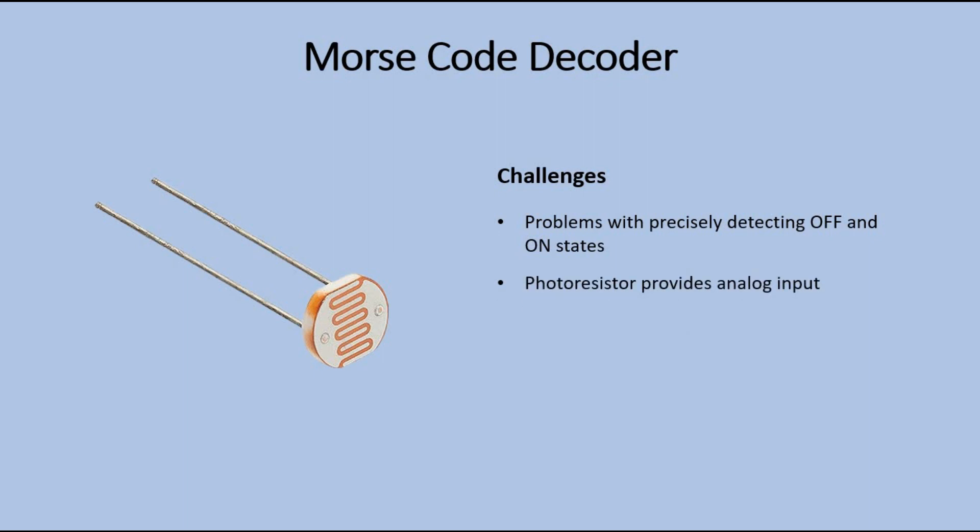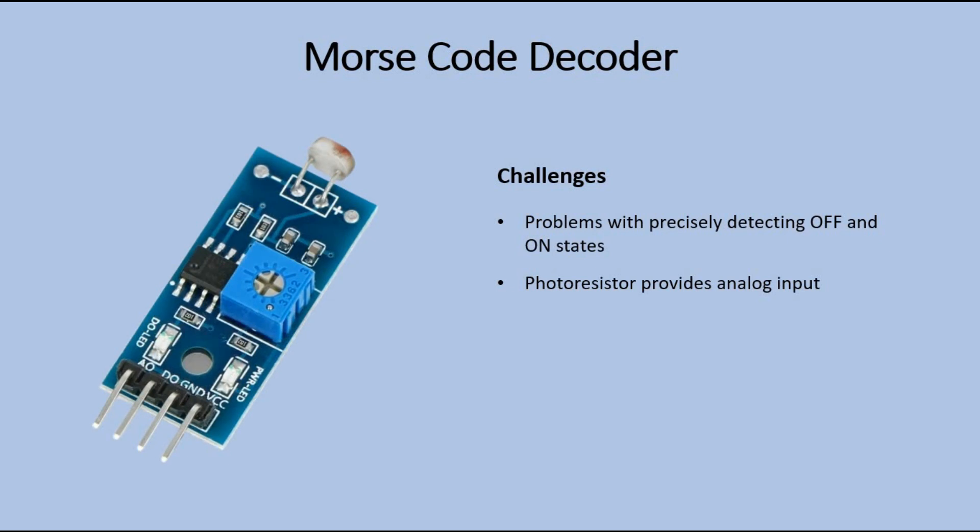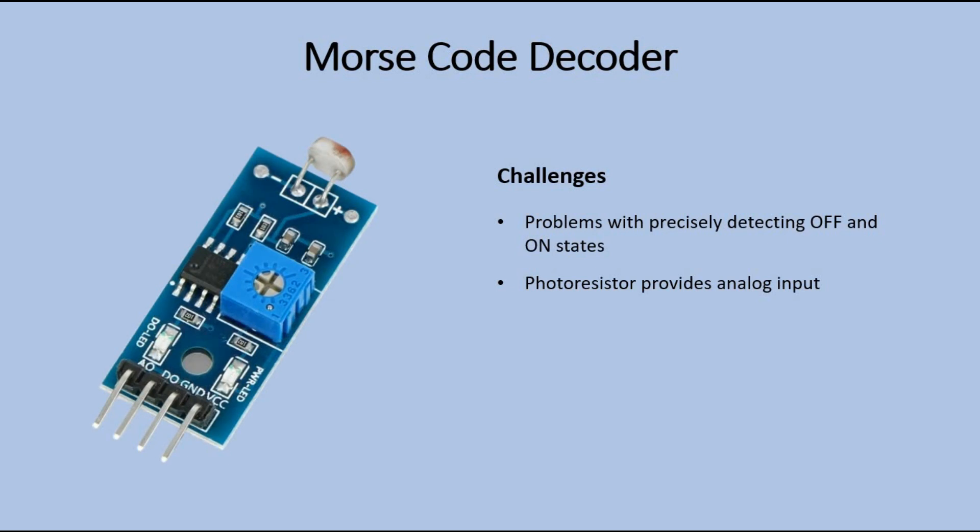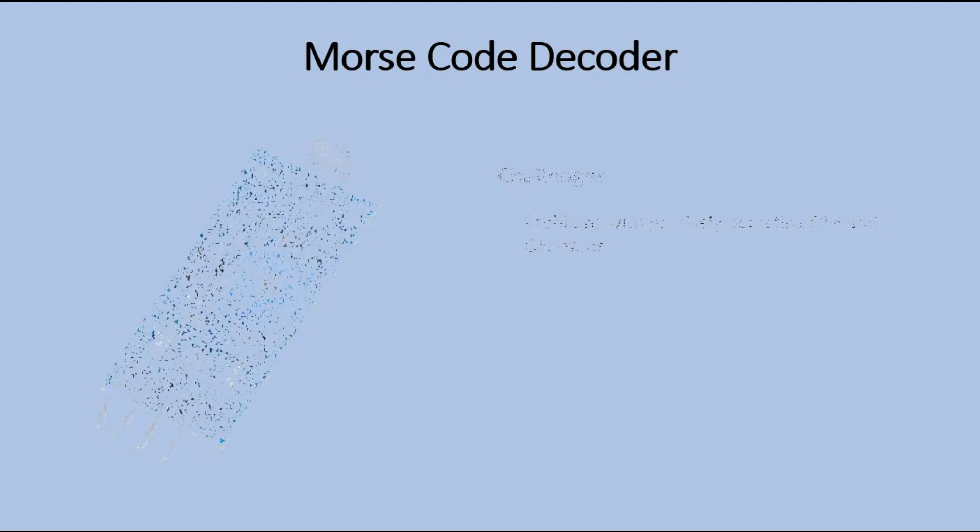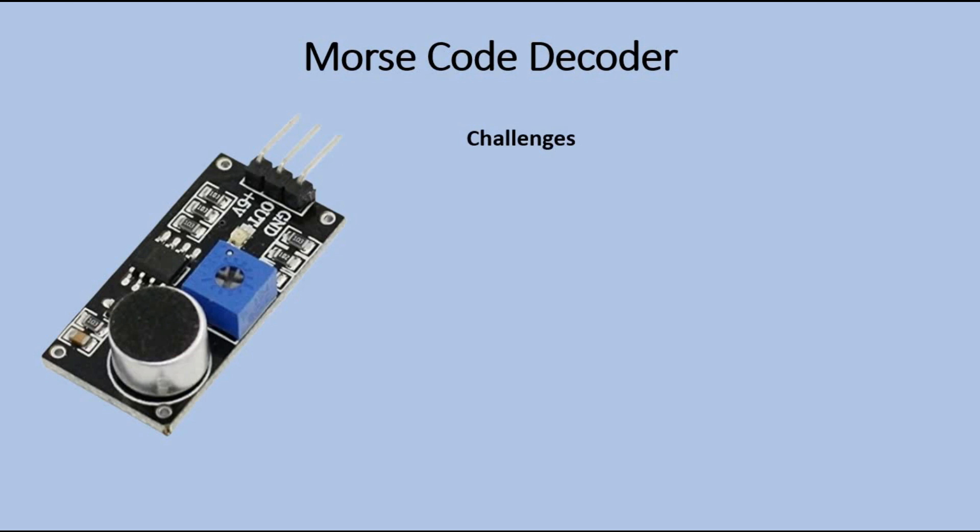The additional difficulty was that the photoresistor was returning analog input, and not just high and low signals. So there was additional coding required to detect among changes in light intensity where the signal starts and when the signal ends. I eventually used this photoresistor module that provides digital input, and built-in potentiometer that allows you to configure light intensity above which the module returns high signal. But the first limitation still applied here. Then I tried sound sensor, and here again I realized that recognizing sound signals, which are very short and very close to each other, is a challenge.